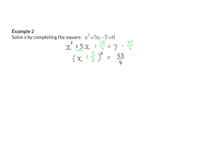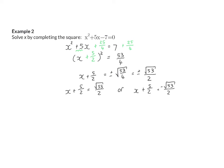Now I have my bracket squared equal to a constant, so I can take the square root on both sides, and on the right I will have plus or minus the square root of 53 over four, which can also be written as the square root of 53 over two. I'm going to split up into my positive and negative options of answers, and then solve by subtracting five over two on the right hand side. I'm going to leave both my answers in surd form.